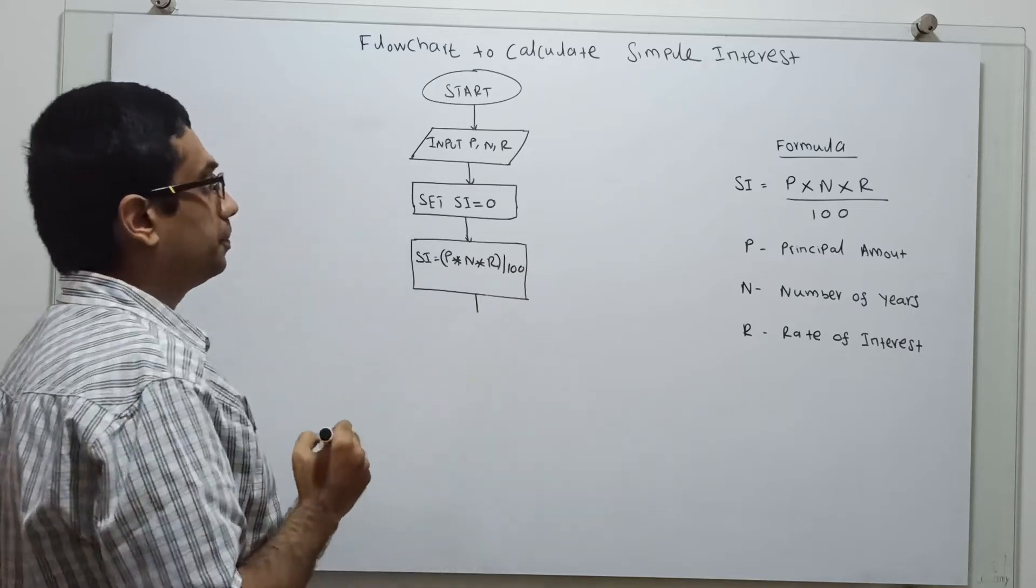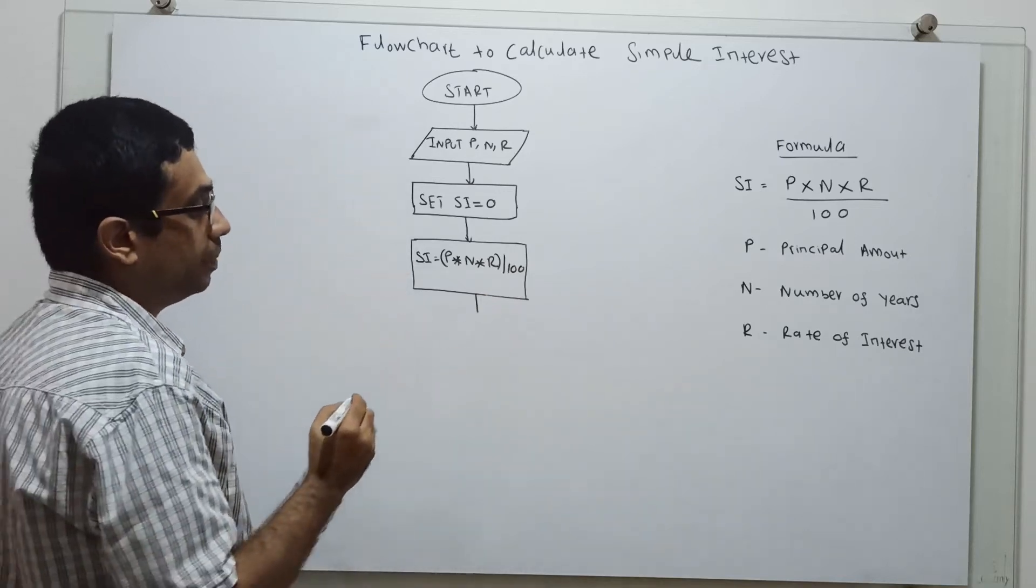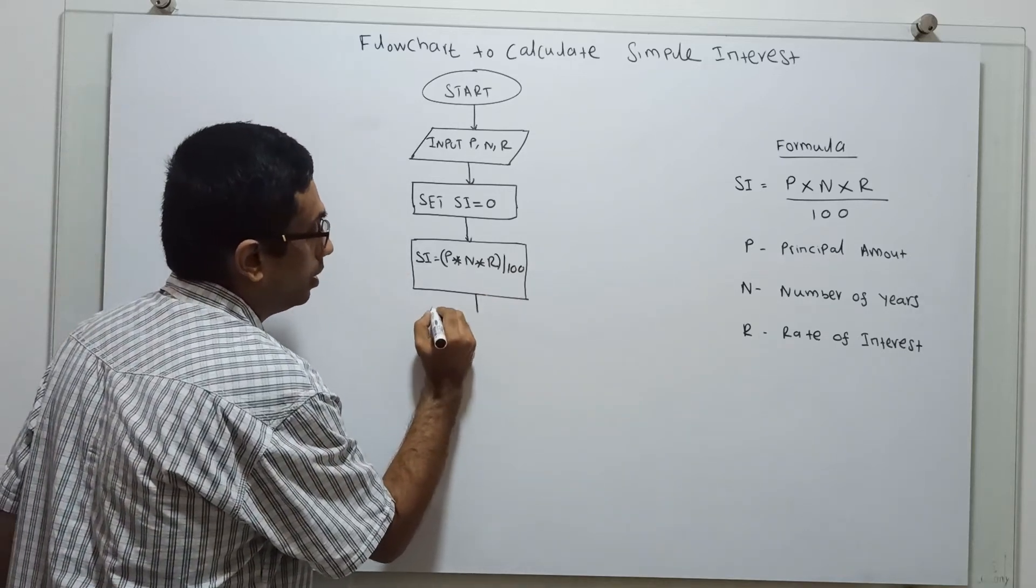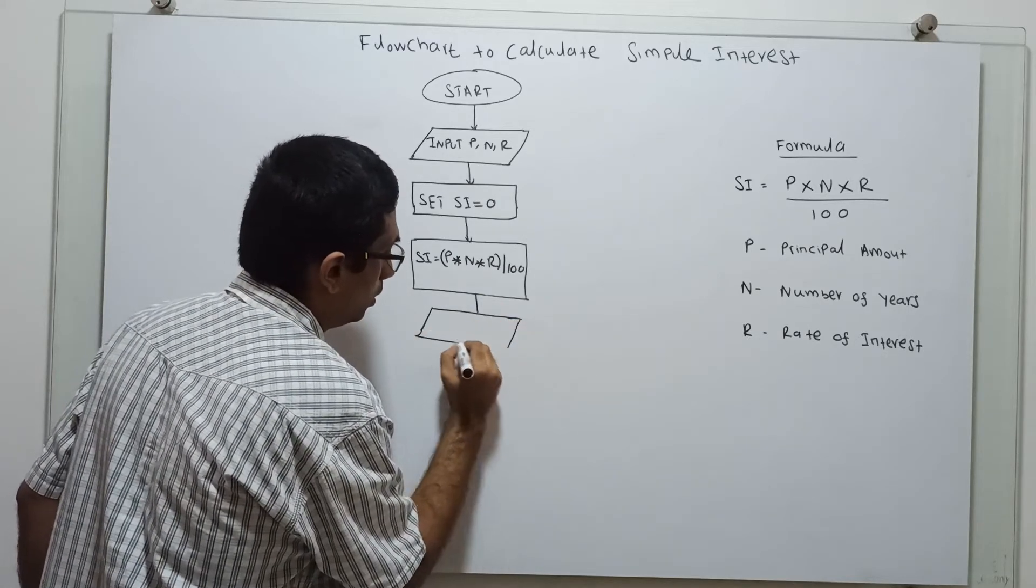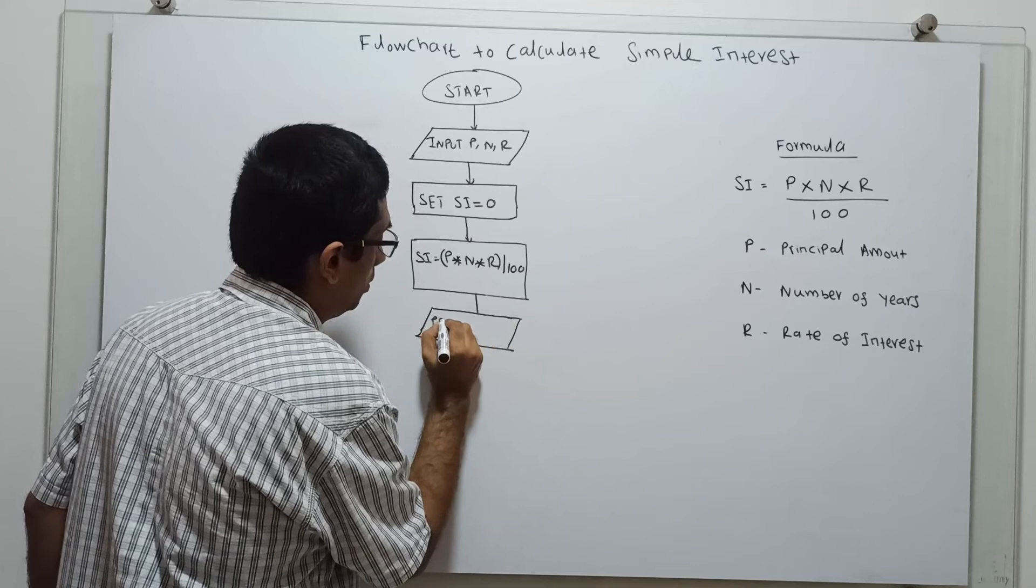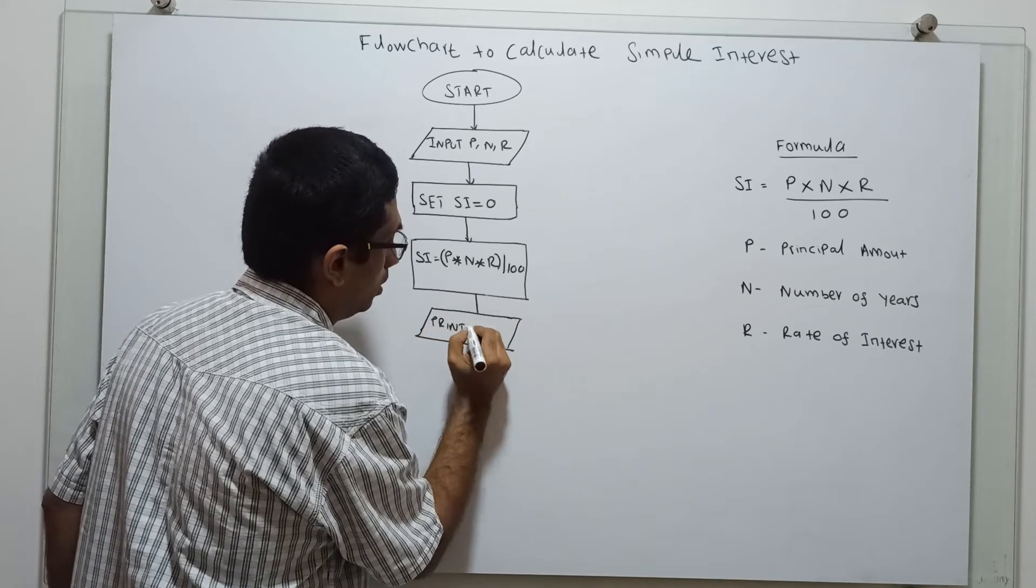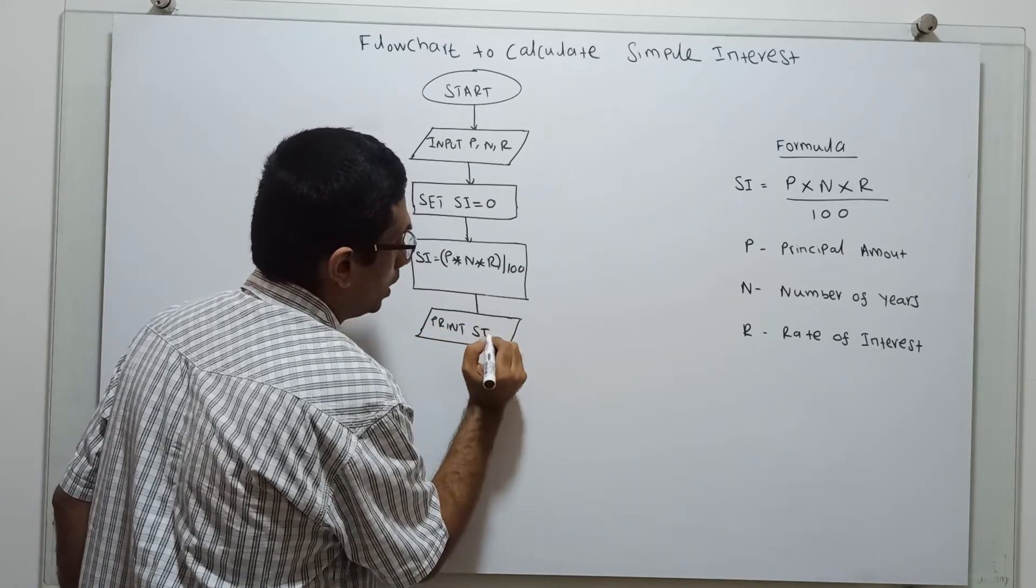So next, we have to print the result. Like an input, we have to use the parallelogram to print the result. Print SI, that's it.